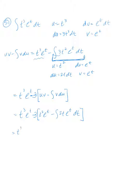Copying down what I have so far: t cubed e to the t minus 3t squared e to the t plus 6 times the integral of t e to the t dt. I just distributed that negative 3.